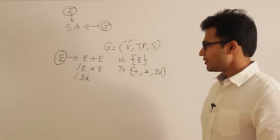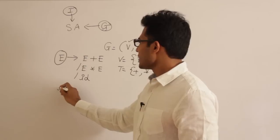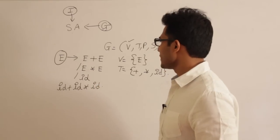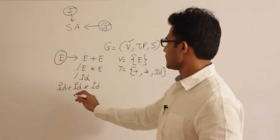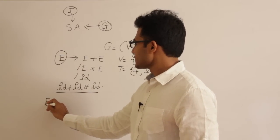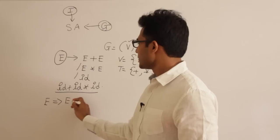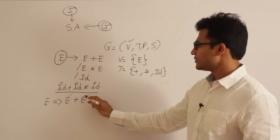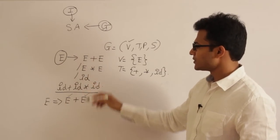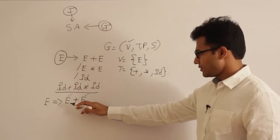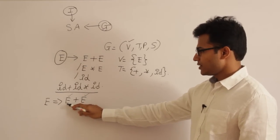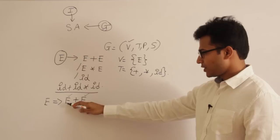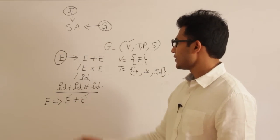The purpose of the grammar is to generate strings. For example, if I want to derive the string id + id * id from this grammar, I can do a derivation. In a left-most derivation, at every step we replace the left-most variable first. So: E ⇒ E + E, and then the left-most E is replaced with id, giving id + E, and so on.